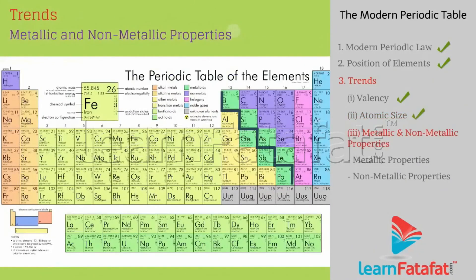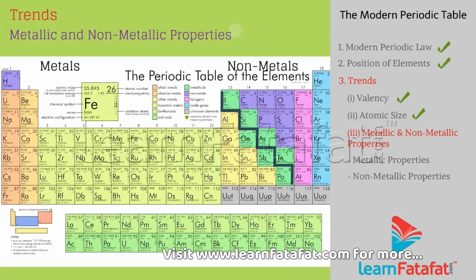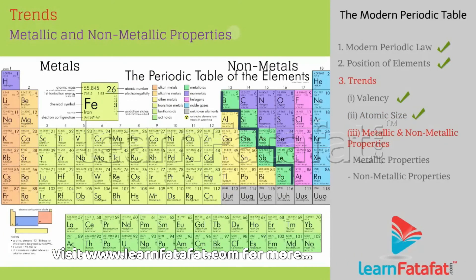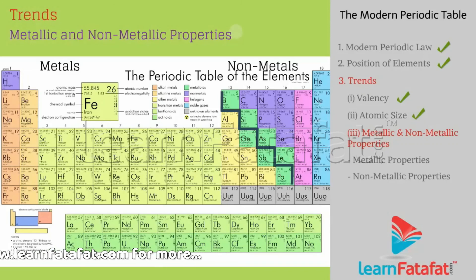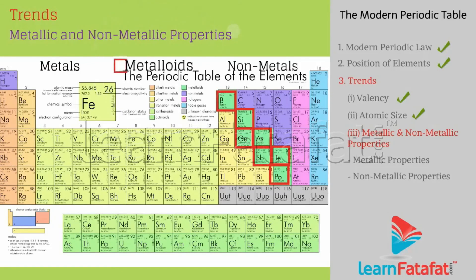Metallic and non-metallic properties: the zigzag line separates metals from non-metals in the modern periodic table. Metals are placed on the left-hand side and non-metals on the right-hand side. Some elements such as boron, silicon, germanium, and arsenic show properties of both metals and non-metals; these are called metalloids.